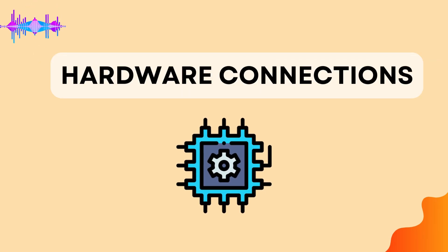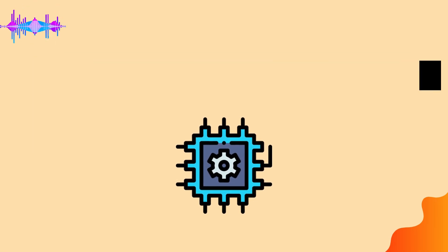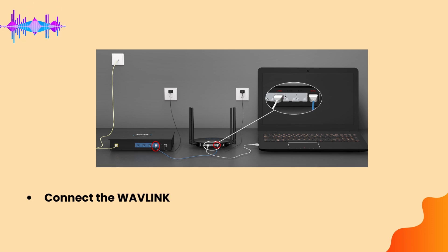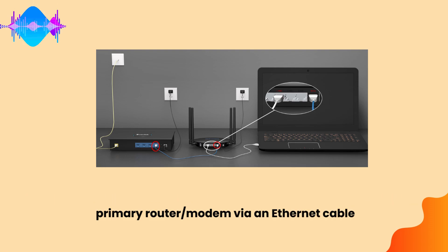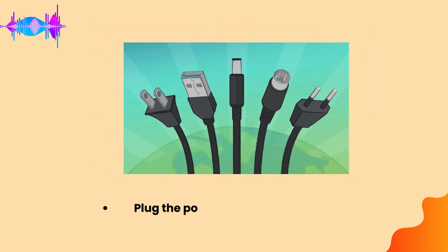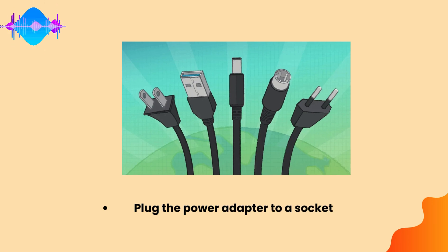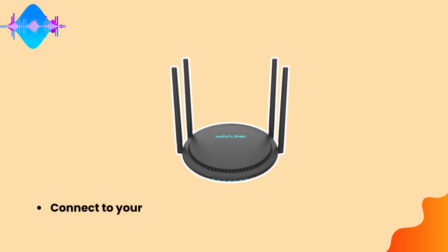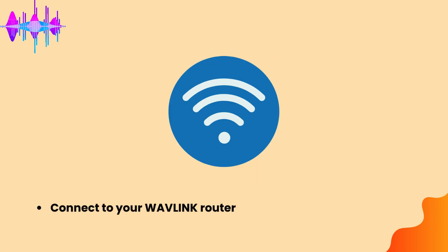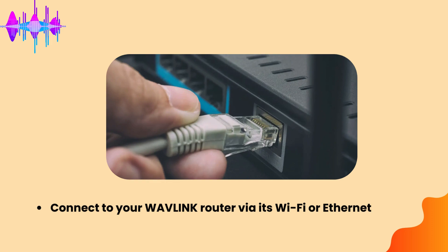Hardware Connections. Connect the Wavlink Router's WAN port to the LAN port of your primary router or modem via an Ethernet cable. Plug the power adapter into a socket. Power on the Wavlink Router. Connect to your Wavlink Router via its Wi-Fi or Ethernet cable.